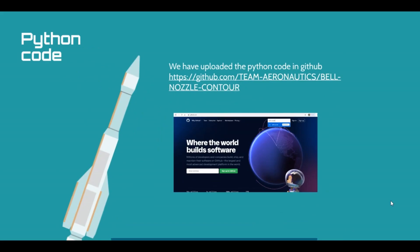This Python code is available in GitHub. You can go to the GitHub website and search bell nozzle contour. You will find it. I will also mention the link for the GitHub in the description. Please check it out.